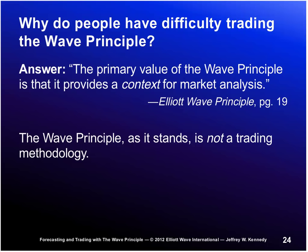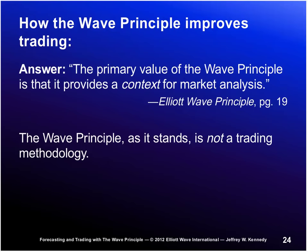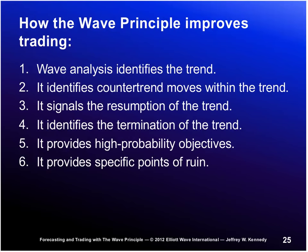So what I do with most of my work is try to take that next step with respect to making the wave principle more user-friendly to traders. To do that, you have to understand how the wave principle actually does improve trading. Wave analysis improves trading by doing six things: it identifies the trend, identifies counter-trend moves within the trend, signals the resumption of the trend, signals the termination of the trend, provides high probability objectives, and — more importantly — provides specific points of ruin, which is a fancy way of saying it lets you know when you're wrong.